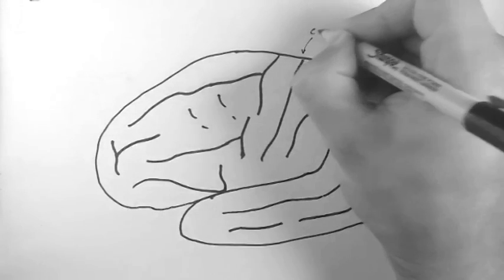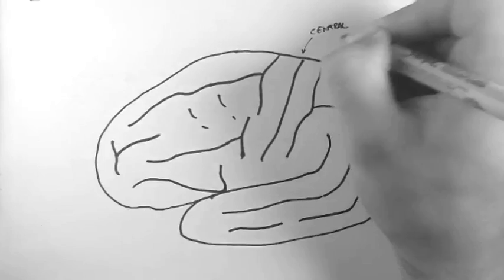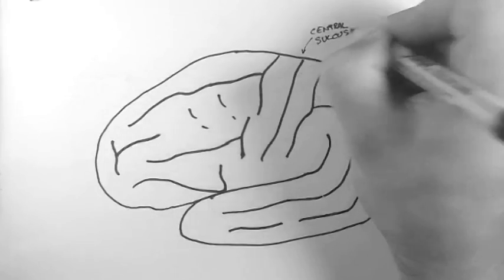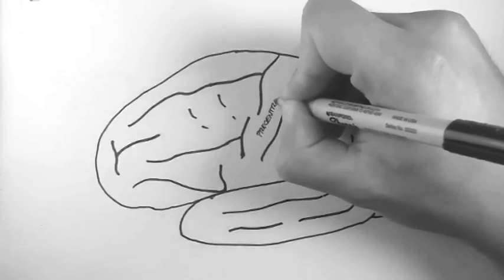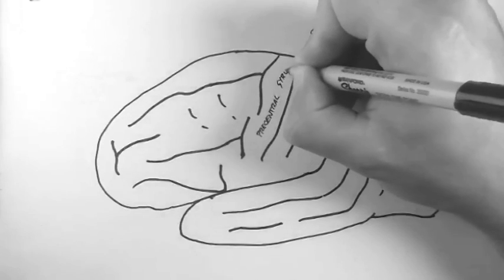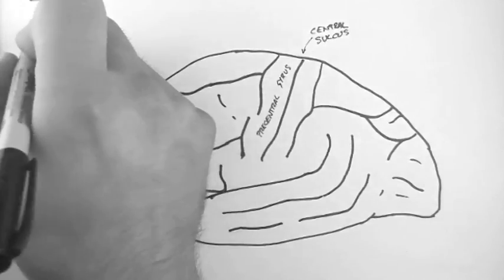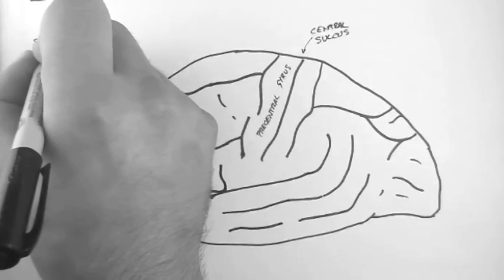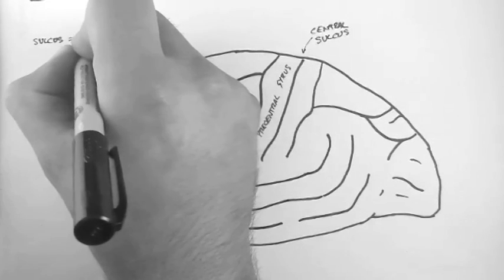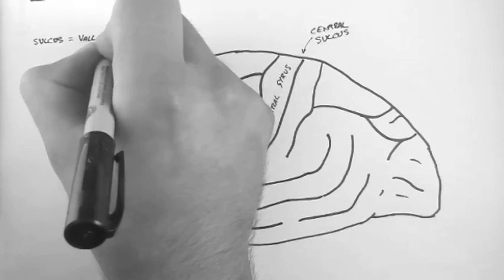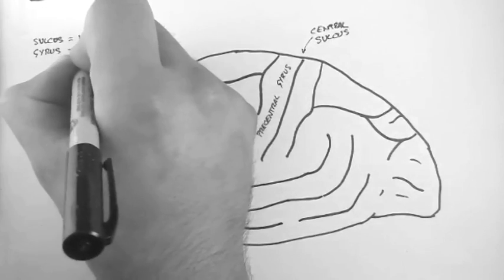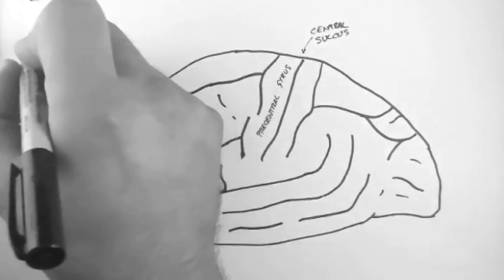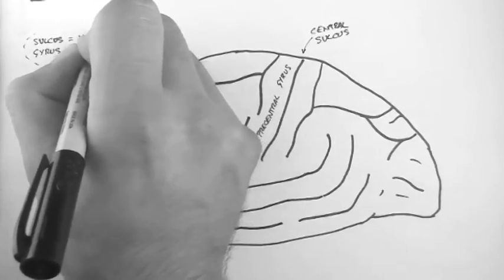So here we have the central sulcus, and this is a very important sulcus in the brain. In front of it we have the precentral gyrus. At this point I should say that the sulcus, or the sulci, are the valleys. The raised parts, or the hills, we call the gyri, or gyrus singular.